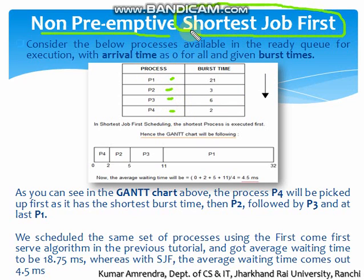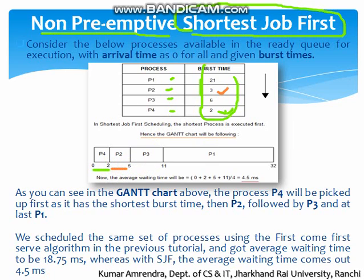In non-preemptive Shortest Job First, we pick the process with the shortest burst time first. That is P2, with a burst time of 3, running from time 2 to 5. After P2, the job with the next least burst time is P3, with burst time 6, finishing at time 11. Then P4, and finally P1, which has 21 units of burst time, finishing at time 32. This is non-preemptive SJF.